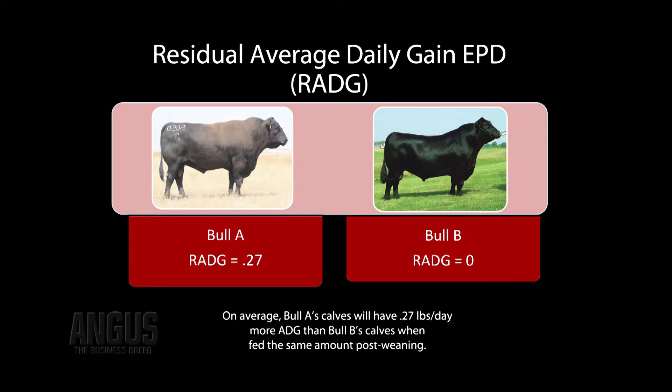So let's take two bulls. Bull A has an RADG EPD of plus 0.27, and Bull B has an RADG EPD of zero. As with all EPDs, you take the difference between the two,